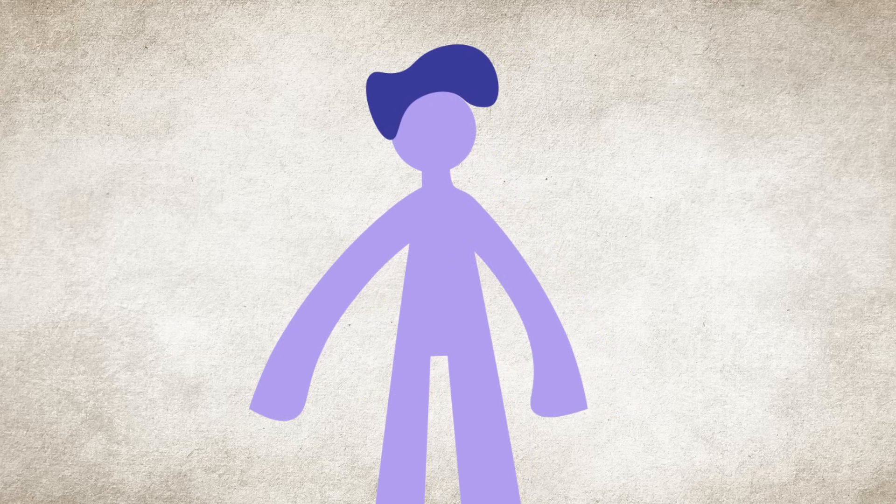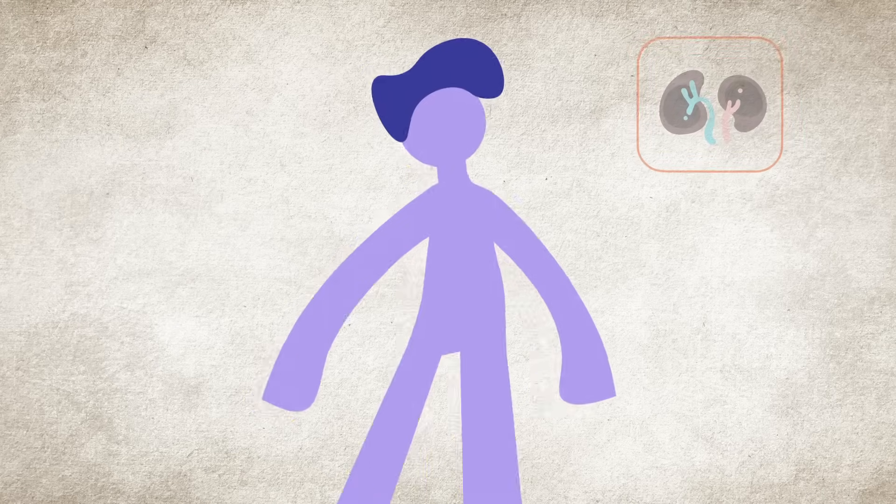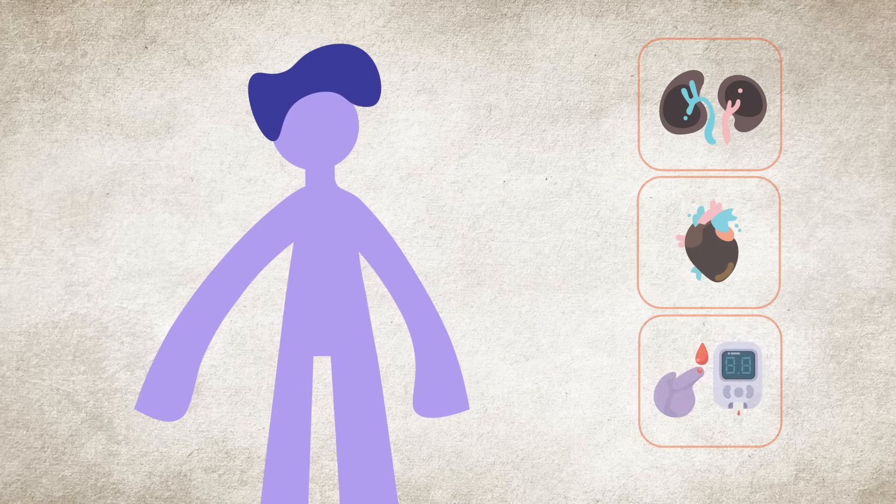Making healthy food and lifestyle choices is important. But it's even more important if you have or are at risk of having kidney disease, heart disease, or diabetes.